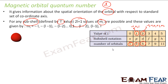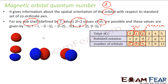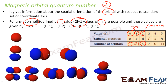So if you see, for the S orbital there is only one shape. For P orbitals I have 3 orientations. For D orbitals I have 5 different orientations. So for S there is only one orientation, for P there are 3 orientations, and for D there are 5 orientations.